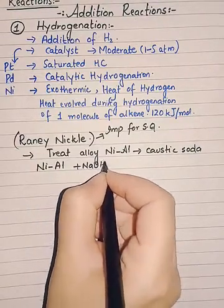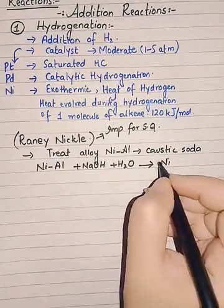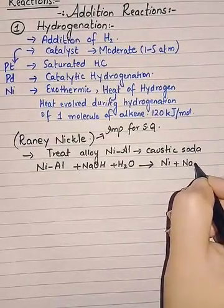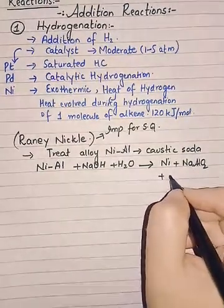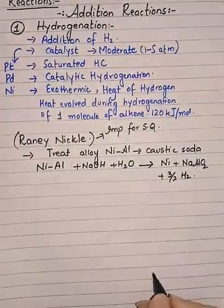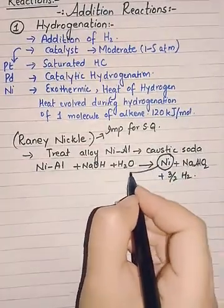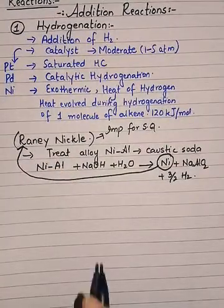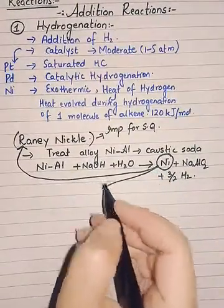When we treat the nickel-aluminium alloy with caustic soda in the presence of water, the nickel is given out, sodium combines with aluminium, and three-halves of a molecule of hydrogen is evolved. The nickel prepared in this way is known as Raney nickel. We will use this nickel as a catalyst for the hydrogenation of alkenes.